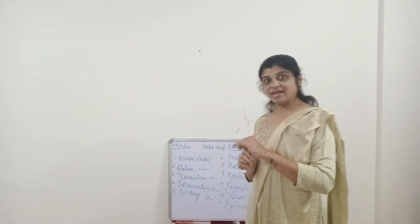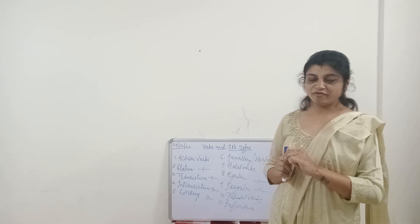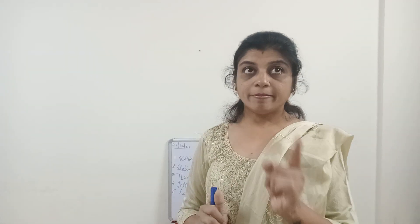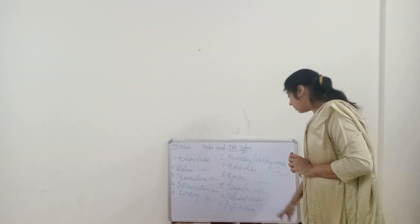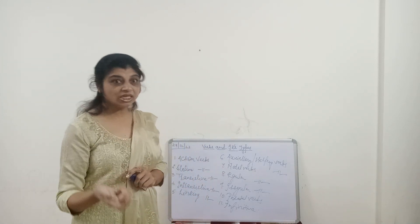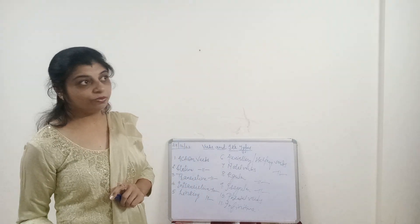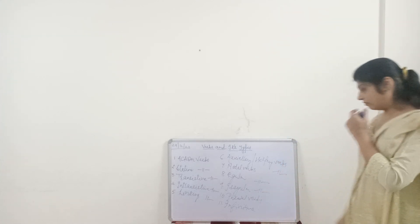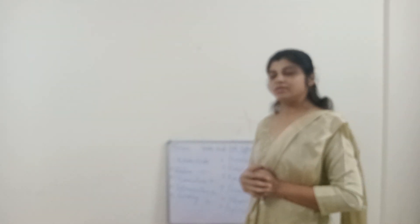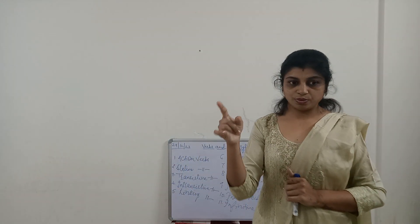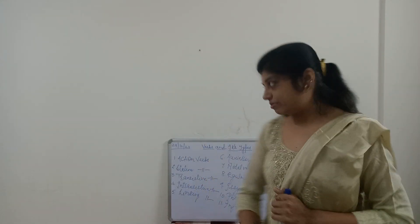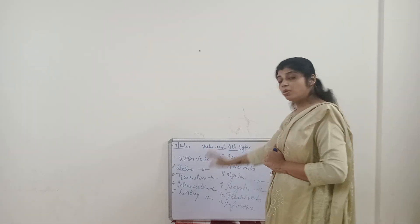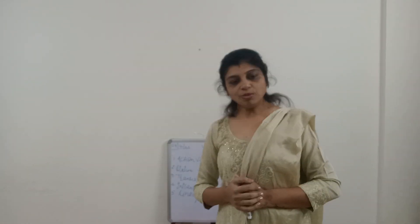Another example of an irregular verb: begin – began – begun (B-E-G-I-N, B-E-G-A-N, B-E-G-U-N). Then phrasal verbs — these are verbs which form phrases using prepositions or adverbs, like 'ask for' or 'put up with'. Infinitive verbs are verbs prefixed with 'to': to go, to take, to see. These come under infinitive verbs. I hope I have covered all the verbs and their types.